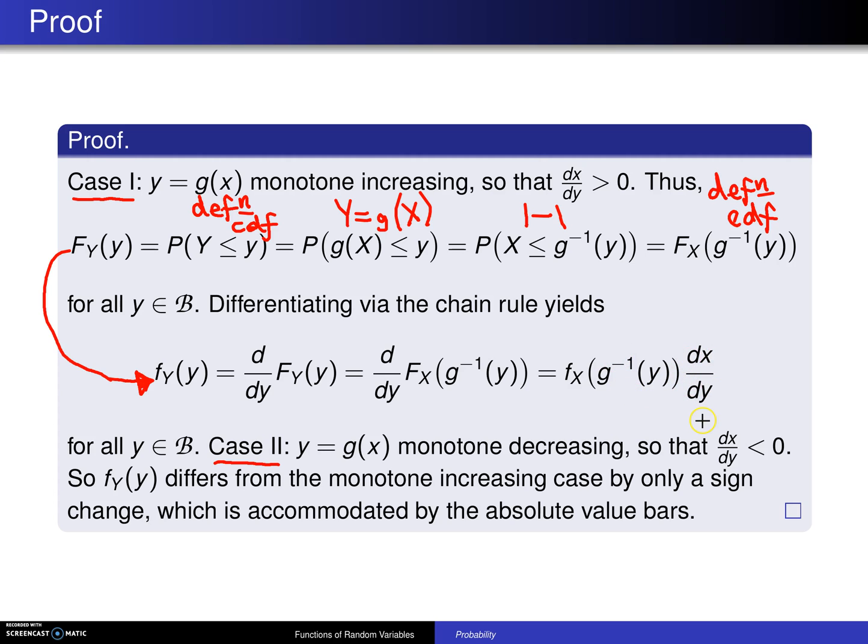Now in case 2, we know that dx/dy will be less than 0, and so in that case, what you do is you put on absolute value bars, and that accommodates both of the two different cases, and that completes the proof.